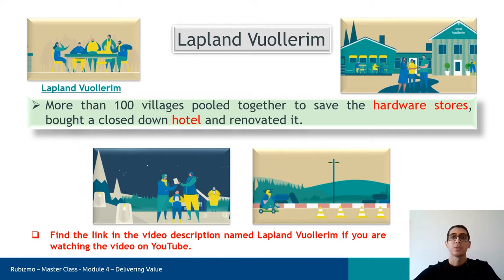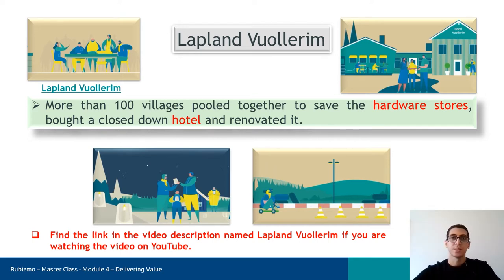We have another case — the company called Hermitia, which produces pet food from insects — and I want to show you its backstage. But first, let's look at a short animation of the company in the next slide.